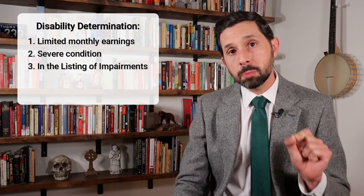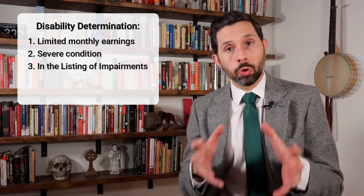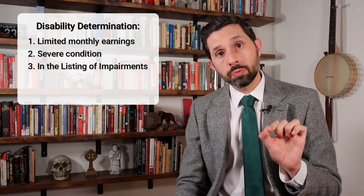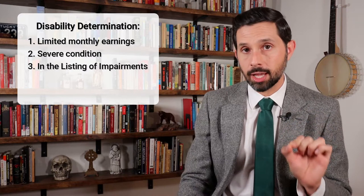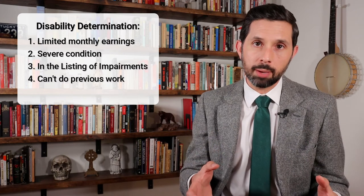Third, your condition must be in the SSA's Listing of Impairments, also called the Blue Book. I'll include a link below to it. If your condition is listed, you're disabled and you don't need to continue to Steps 4 and 5. If your condition is not listed, you can still prove you're disabled by passing Steps 4 and 5. Step 4 requires that your condition interfere with your ability to do your previous work. If not, then you're not disabled and you can't get SSI. If yes, then you can continue to Step 5.